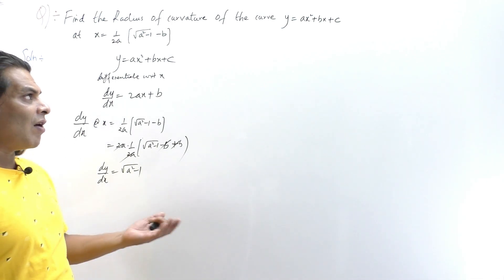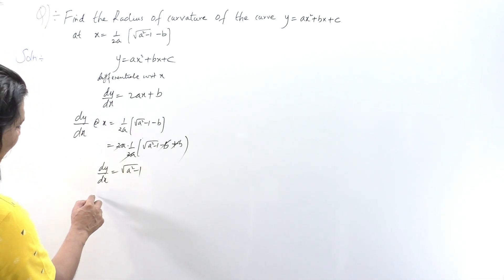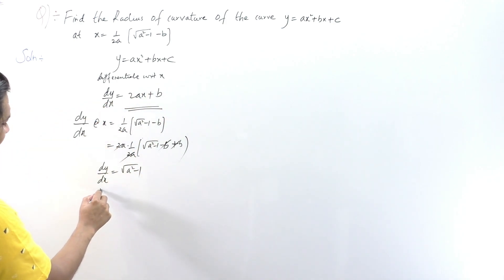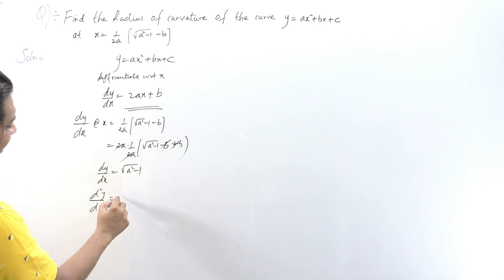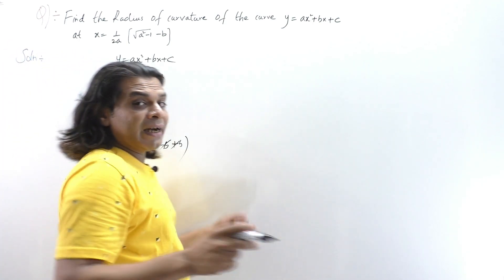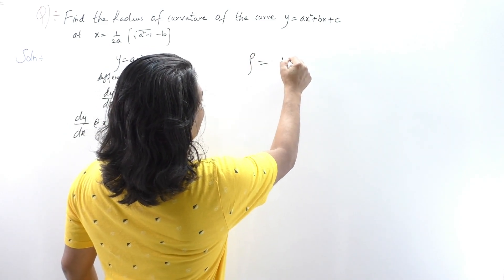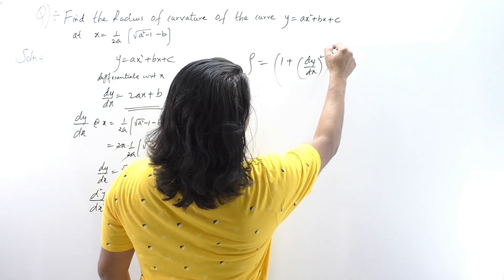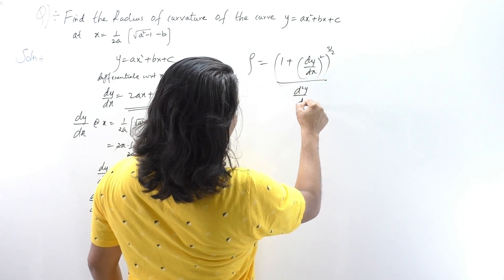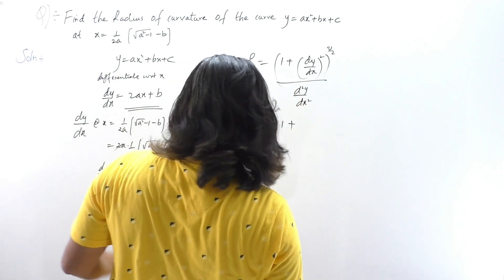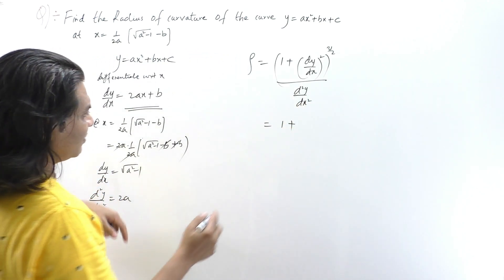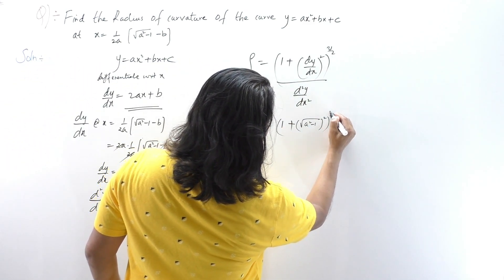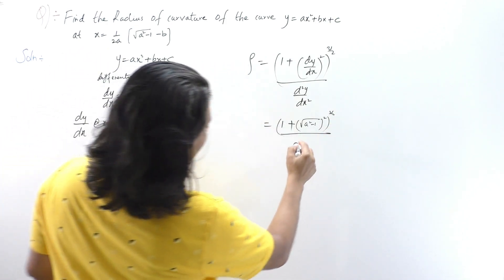According to the radius of curvature formula, we also need d²y/dx². Since dy/dx = 2ax + b, differentiating again gives d²y/dx² = 2a. That is it.